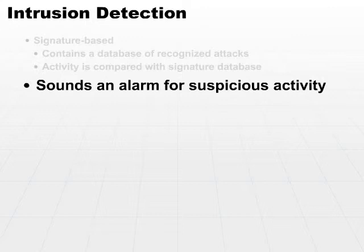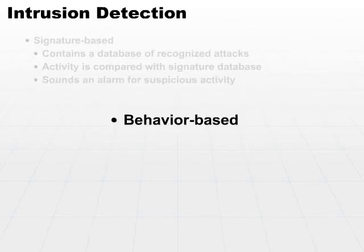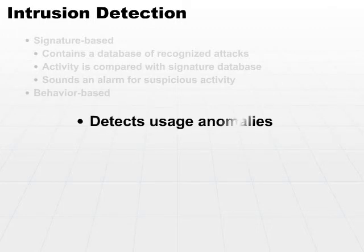The other type of intrusion detection system, which is different from signature-based, is a behavior-based intrusion detection system. This IDS, instead of looking at a static database that has to be updated over and over again, looks for usage anomalies. In other words, it's going to look for something that just doesn't look right. It has to sample normal activity and keep a log of what normal activity for your system looks like. Anytime it finds an obvious anomaly, it'll ring the bell.